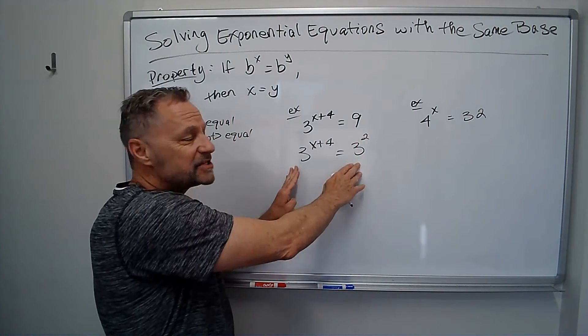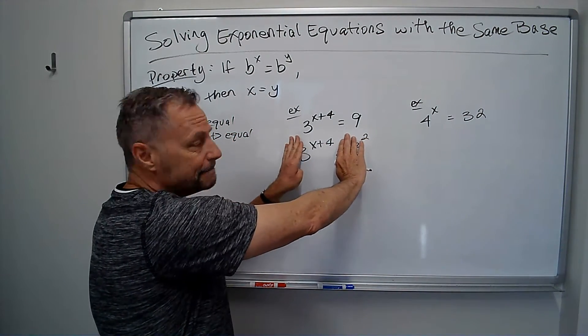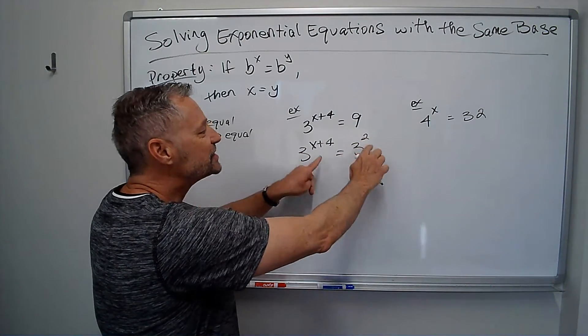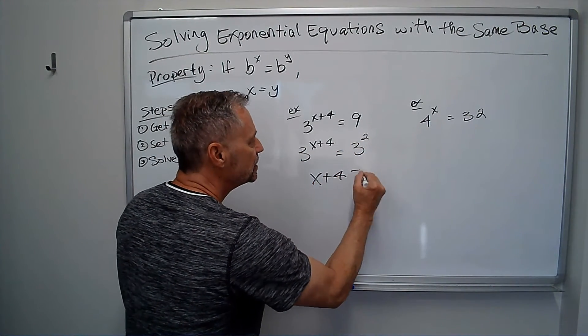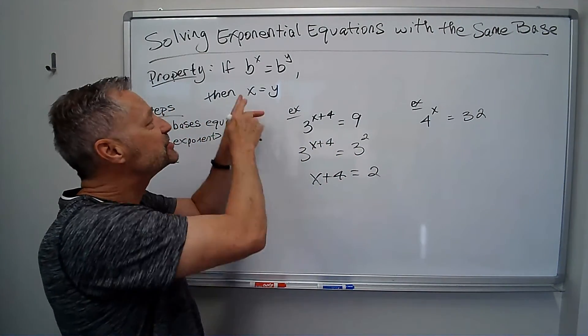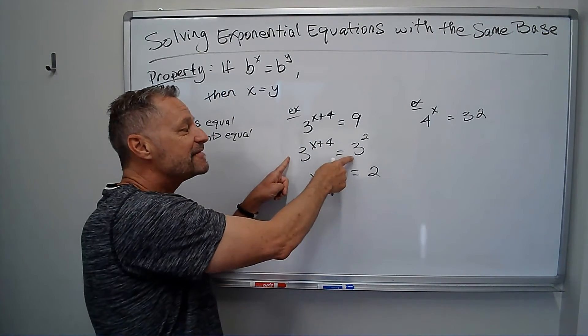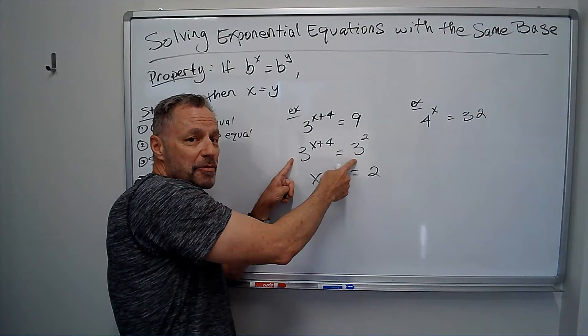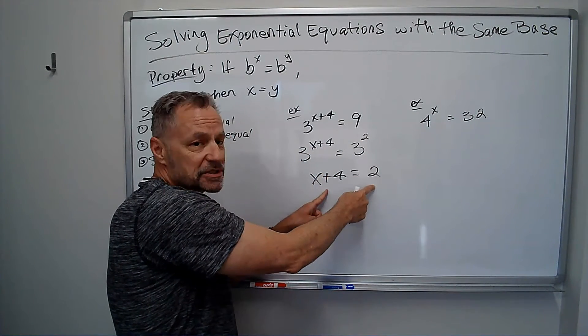And so since both bases are the same, I can ignore them and just say, if the bases are the same, the exponents must also be equal. I'm not dividing both sides by 3 or anything like that. I'm just using this property, saying if these are equal to each other and the bases are the same, then the exponents must be equal.